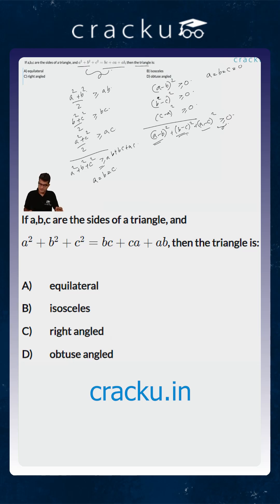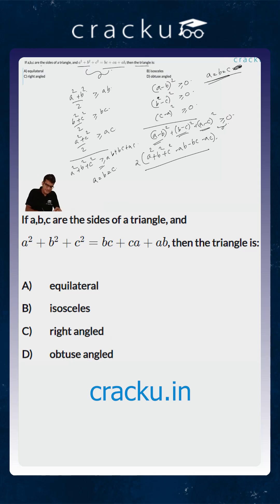The equation given to us is essentially the expansion of (a - b)² + (b - c)² + (c - a)². If you expand it, you get 2(a² + b² + c²) - ab - bc - ac = 0, if and only if a = b = c. This implies that the triangle is an equilateral triangle, because the lengths of the three sides are the same.